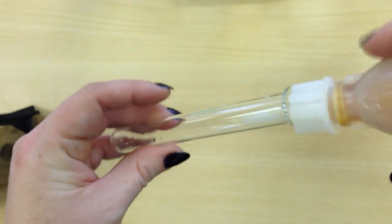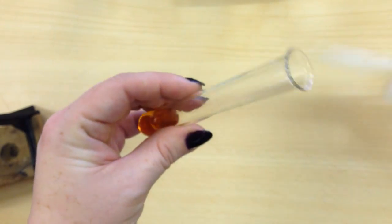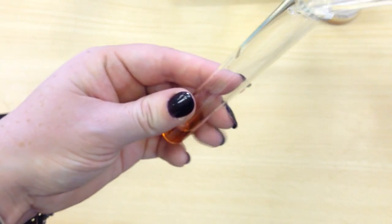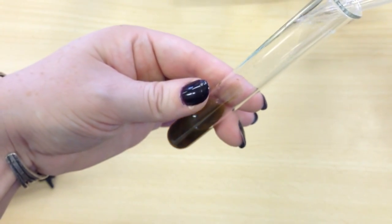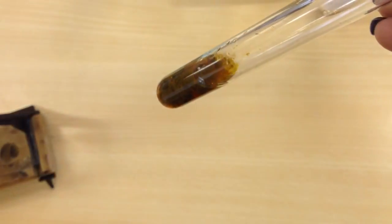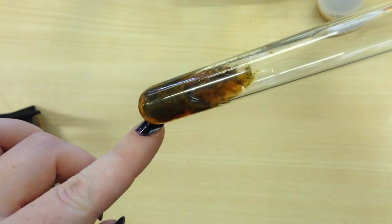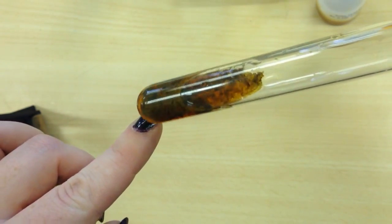So the next reaction is iron 2. So squirting my iron 2 in here, and adding my sodium hydroxide. You can see that we have a brown precipitate being formed. And again, if you look really closely around the edges, you can see some of the unreacted iron 2 solution.